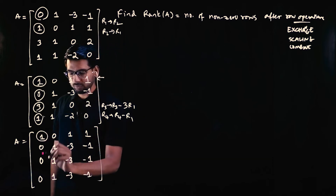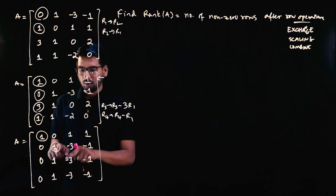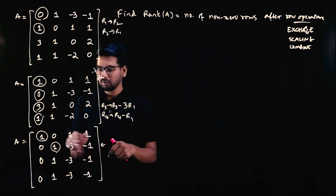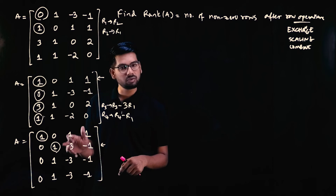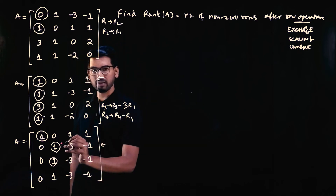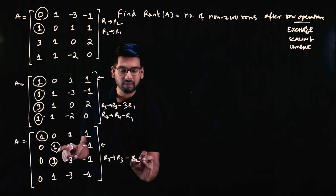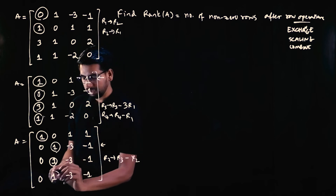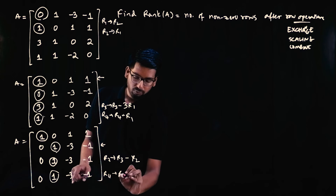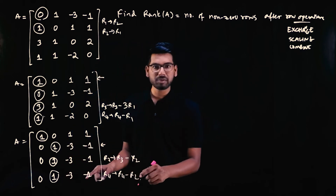Now we move to the second pivot: the second element of the second row is 1, so we use it to zero out the elements below it. Row three and row four both have 1 in column two, so we apply R3 = R3 − R2 and R4 = R4 − R2.